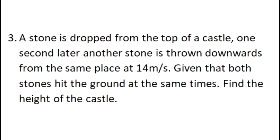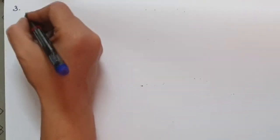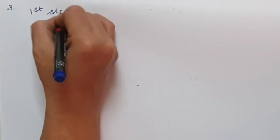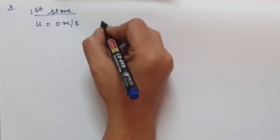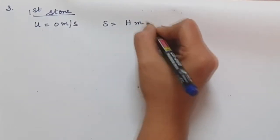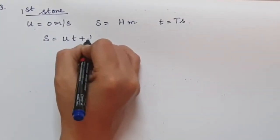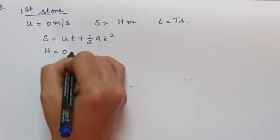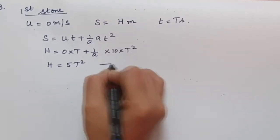A stone is dropped from the top of a castle. One second later, another stone is thrown downwards from the same place at 14 m/s. Both stones hit the ground at the same time — find the height of the castle. For the first stone: initial velocity = 0 m/s, height = h metres, time = t seconds. Using s = ut + ½at²: h = 0 × t + ½ × 10 × t² = 5t². Let this be equation 1.